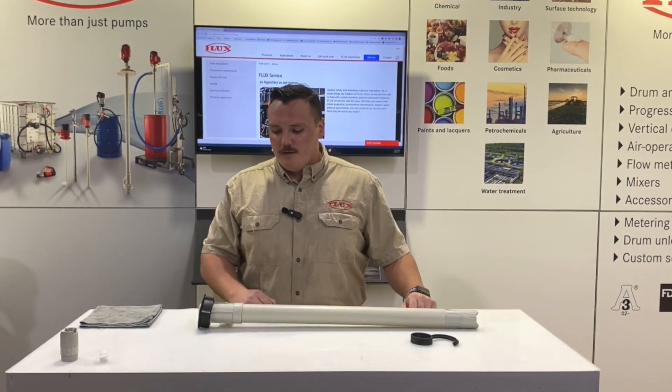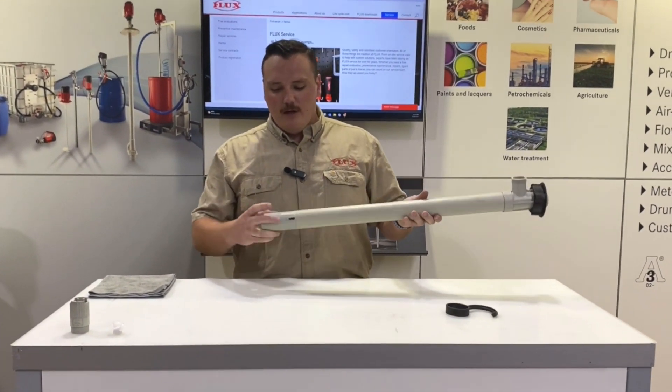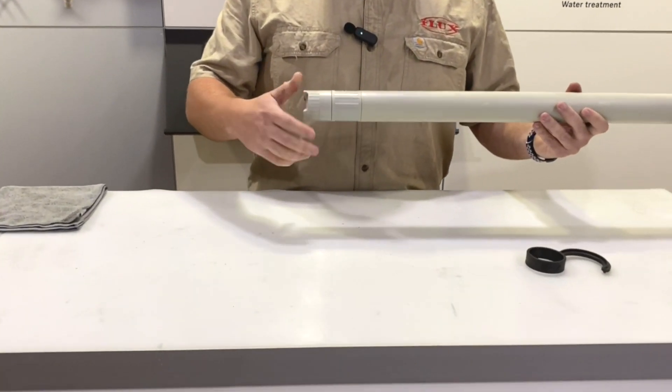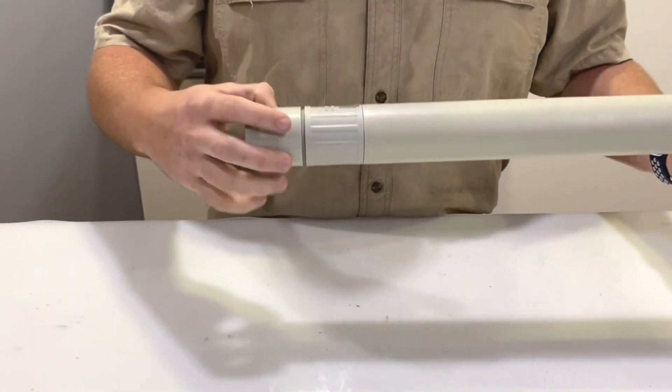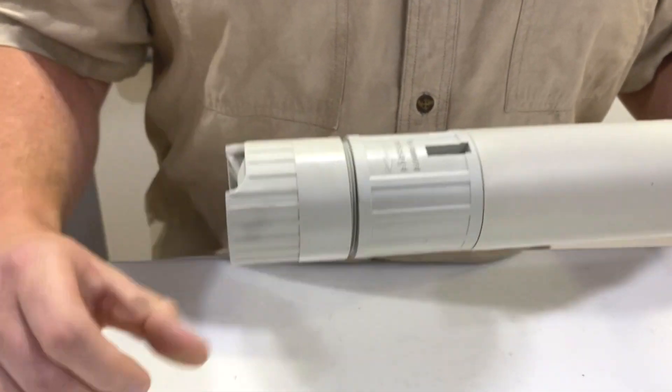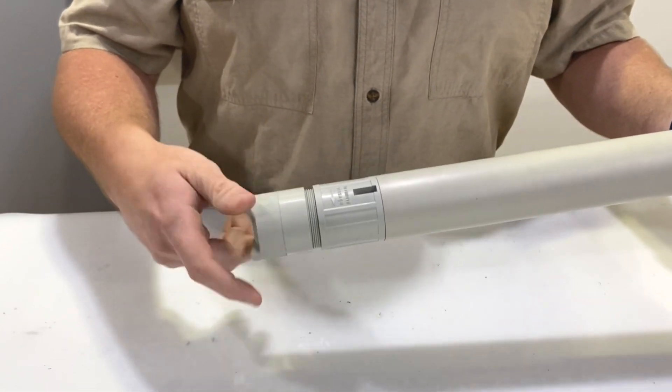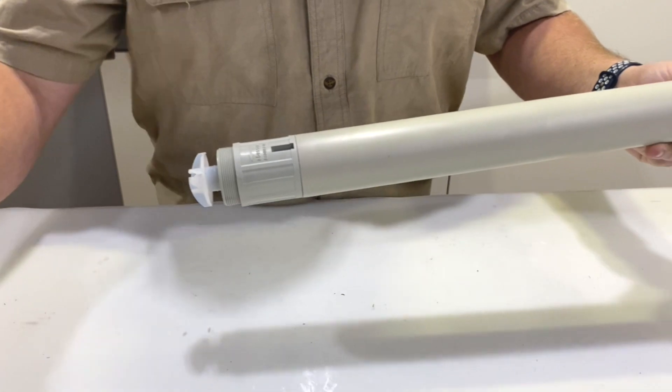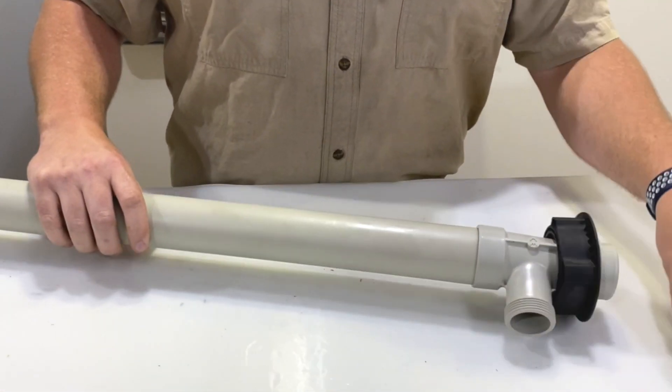We'll begin by breaking the pump down, removing the foot piece. It's reverse thread, indicated by this arrow here. You can screw that off, and then each pump that you receive has the flux clip that you can hang on the discharge and hang your hose from.